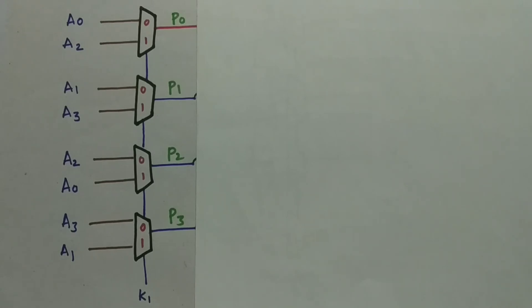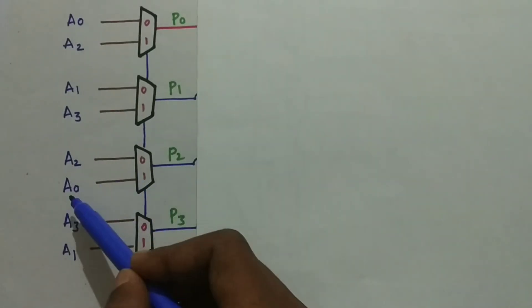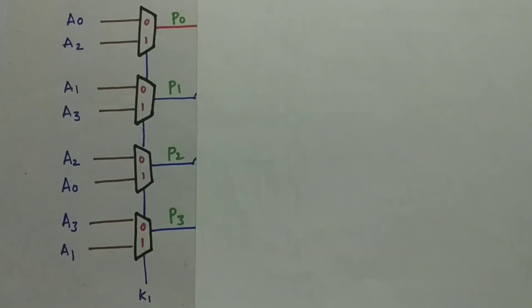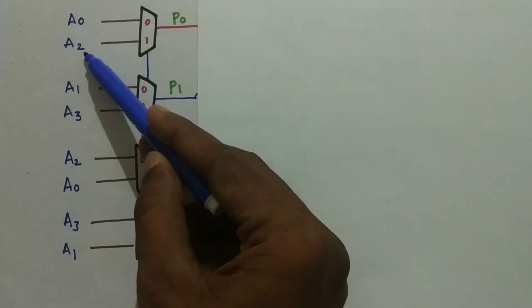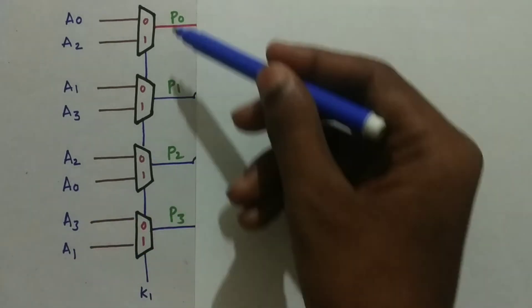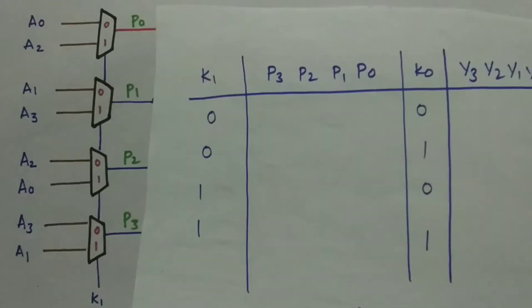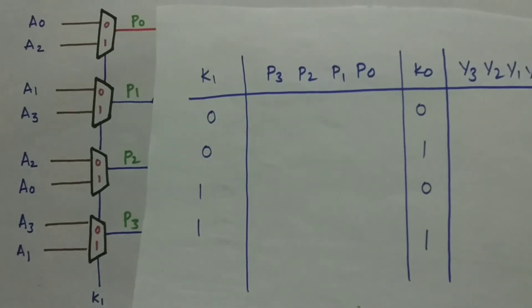What happens when K1 is 1? P0 gets A2, P1 gets A3, and P2 gets A1. An important note: A0's position has been taken by A2 and A1's position has been taken by A3. This happens when we shift the data — if we shift by 2 in a 4-bit word, A2 comes to A0 and A3 comes to A1. So these 4 multiplexers perform rotate right by 2.